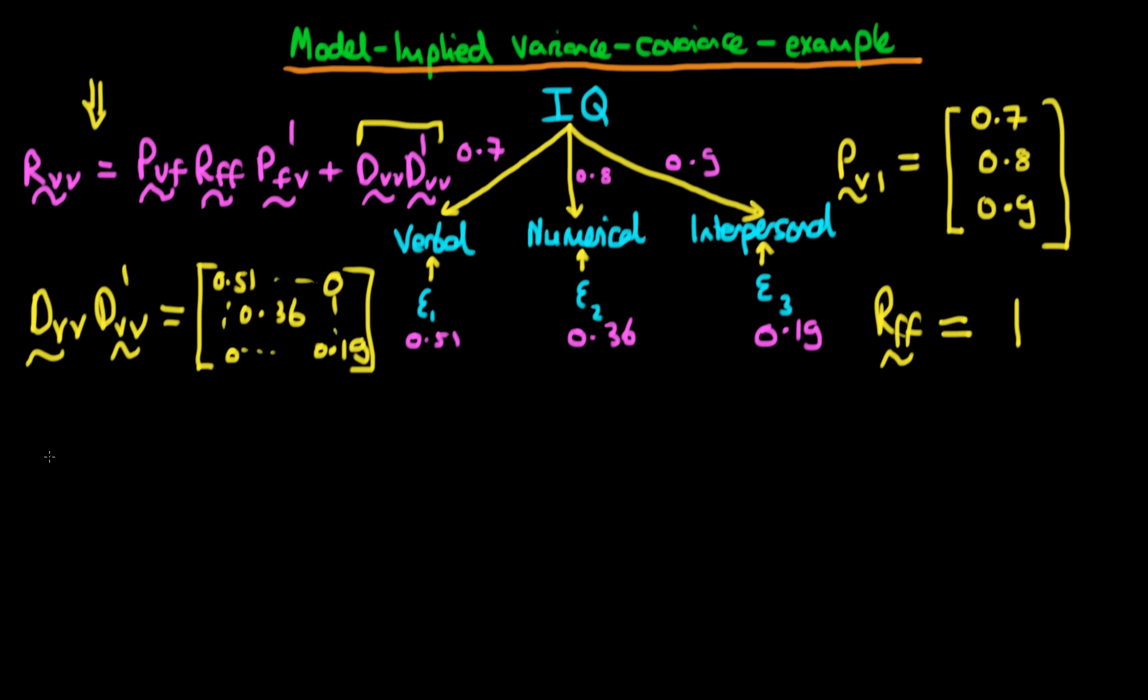So finally, we're now in a position whereby we can actually derive the covariance between these three observed factors with one another. So this is just equal to PVF, which in this circumstance we've already derived. It's just 0.7, 0.8, and 0.9.